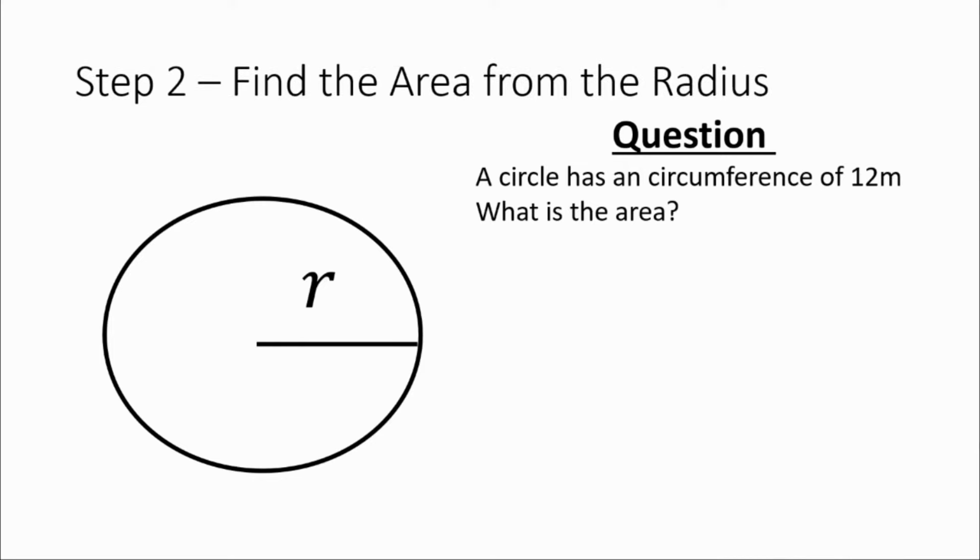What we can then do is carry that number forward. And we're doing step two now, which is to find the area from the radius. So we know already that the radius is 1.91. We just calculated that. We then need a formula for area. Area is equal to πr².